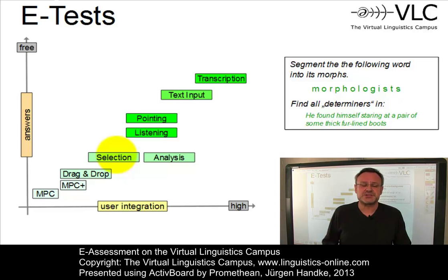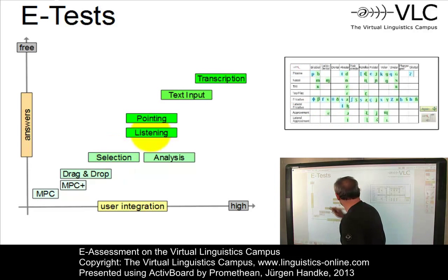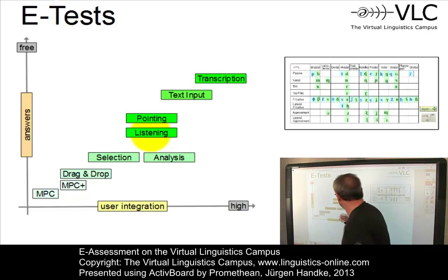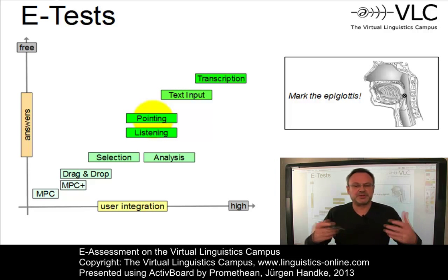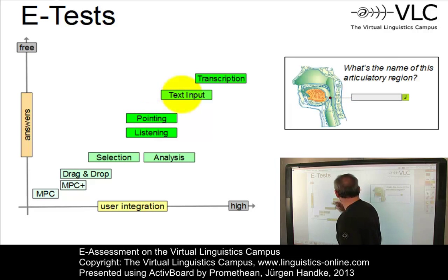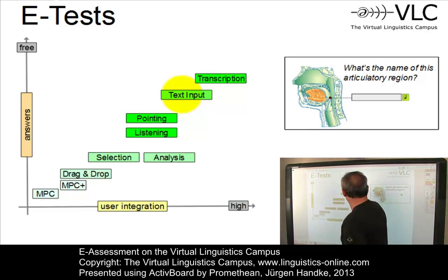Even though the possible answers are still restricted to some extent, the abstraction level on behalf of the user is much higher in selection and analysis tasks, which are used especially when words or sentences have to be analyzed into their component parts. The same applies to listening tasks, where you hear a sound — for example, a consonant — and have to associate it with a location on a chart or map. Or pointing tasks, where particular positions on diagrams or maps have to be marked. Almost free answers are required in text input tasks, where questions are answered in simple text format, and even more so in transcription tasks combining a special symbolic system and audio.